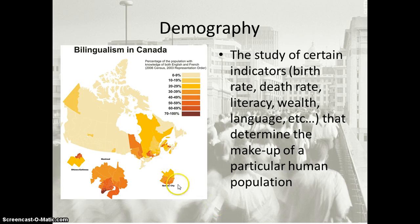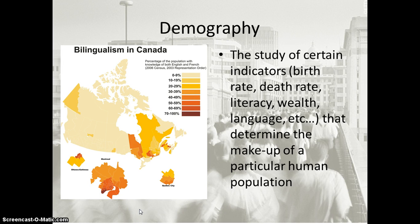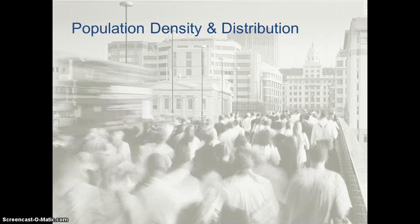An example is this map of Canada — bilingualism, that's people who speak more than one language. We see that the darker the color, the greater the percentage of the population with knowledge of both English and French, since a lot of Eastern Canada was colonized by the French. Specific areas of Canada have a higher concentration of people speaking both English and French, with a pop-out specifically of Montreal, a city that is mostly French-speaking. This is an example of demography — studying indicators like bilingualism and population density and distribution to understand the human population in a certain area.